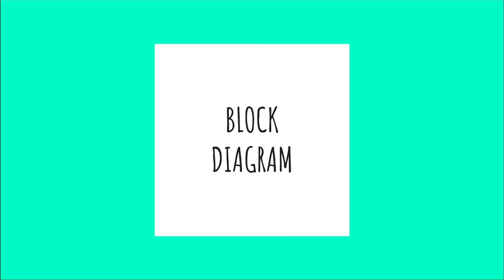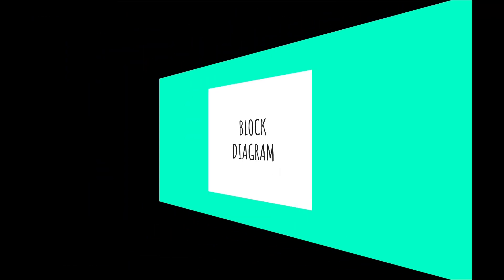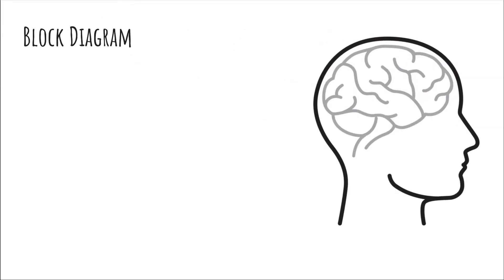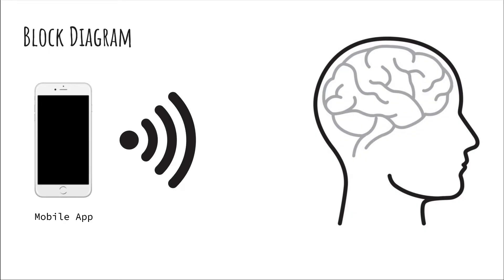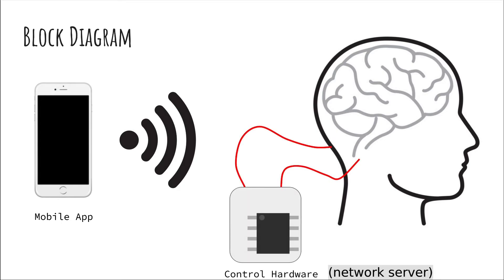Now it's time to put together a block diagram of the major components. First, we have our subject that we wish to control. The next component we need is a mobile application that will give us a nice interface we can use to control the person. We then need to make a Wi-Fi connection, and we connect to the actual control hardware, which will take the instructions across the network and translate them into electrical signals, which then stimulate the vestibular system in the proper manner. This will allow us to control the movements of the subject.